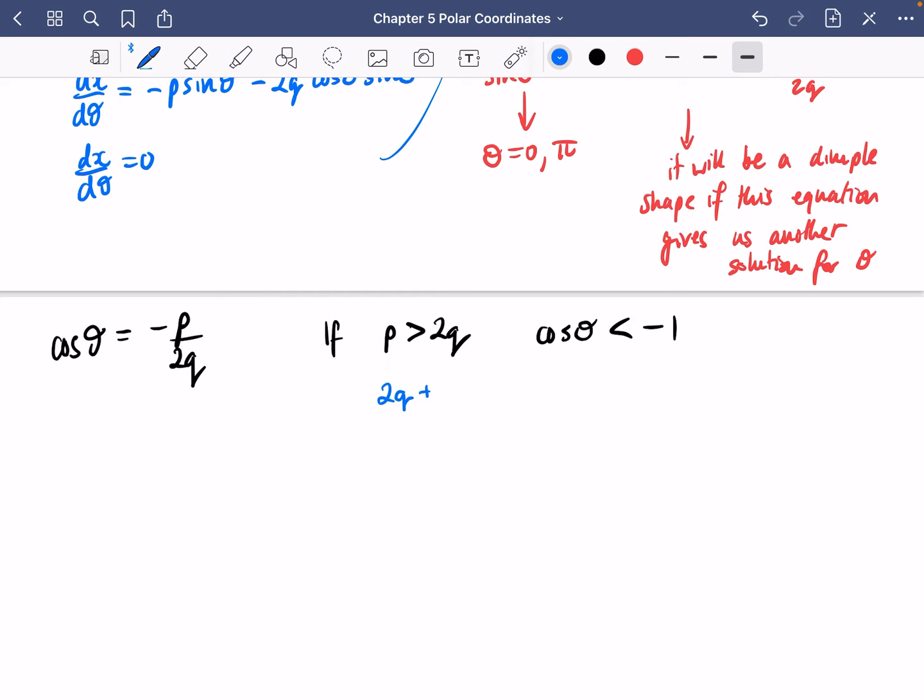it would be like, I don't know, 2q plus one over 2q. This whole thing is going to be more, is going to be less. It's going to be more negative than negative one. So cos θ is going to be less than negative one. So if p is greater than 2q, cos θ is less than minus one. And this has no solutions.